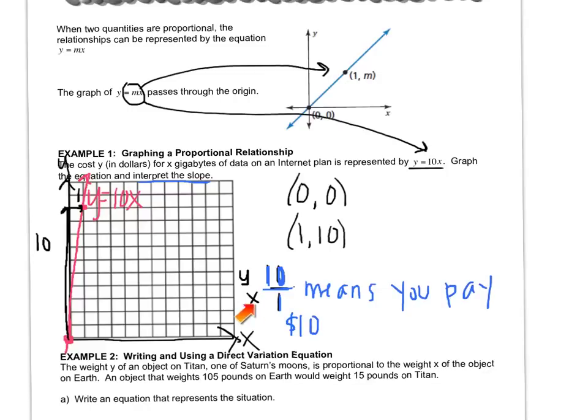The label is dollars, so that means that you pay ten dollars. Then what does the x represent? Because the bottom number of the slope represents your x value. What label goes with the x value? Gigabytes. So that means you pay ten dollars for one gigabyte. I use the numbers in the slope and the labels in the question to help me write this interpretation.